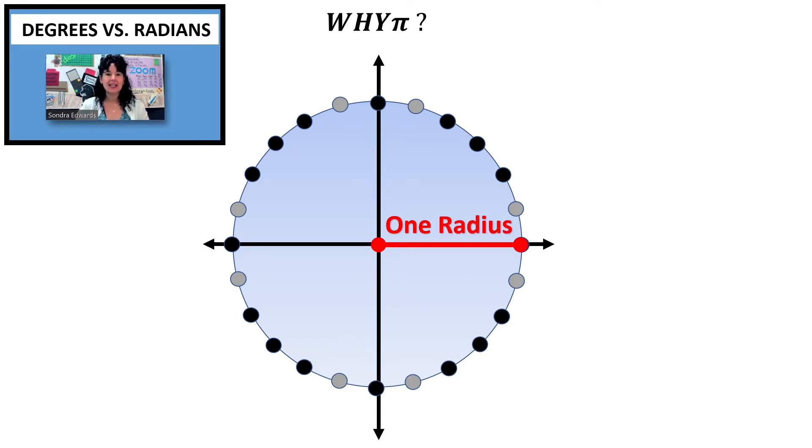One radius. If I have one radius, if I were to pick that up, pretend for a moment that that's just a string and I can lift that up and then lie it along the outside of the circle. Well, if I pick up that radius and I lie it along the circle, that's how much of that circle's edge that one radius takes up. Let's repeat that process.